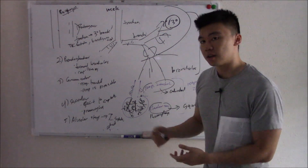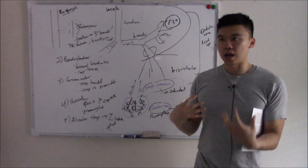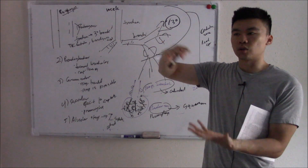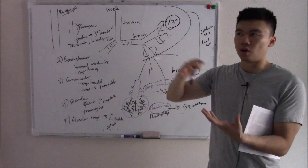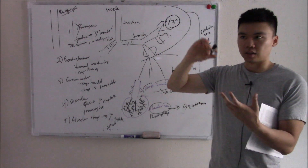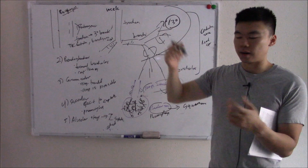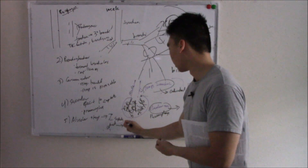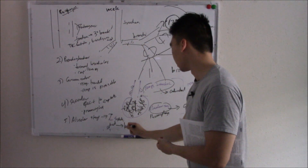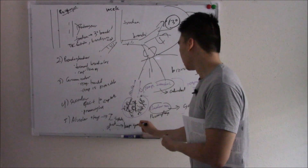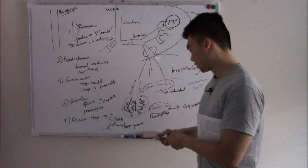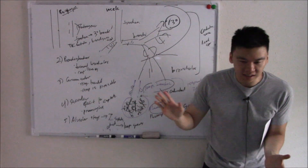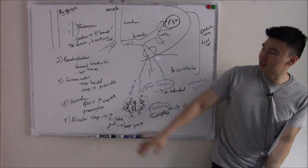An important thing to know: when you're born you have a ton of alveoli, but they continue to increase in number as you grow, all the way until about age eight. And that is basic lung anatomy and embryology.